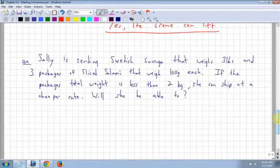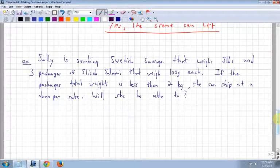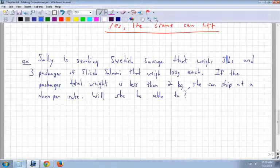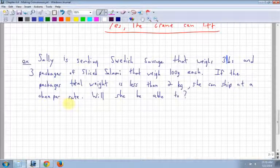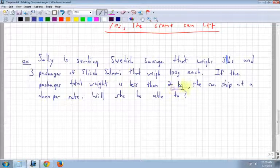Last example here. So Sally is selling Swedish sausage that weighs 3 pounds. That's confusing because it looks like a 1. 3 pounds and 3 packages of sliced salami that weigh 100 grams each. So we've got two different types of weight measurement here. Great thing about living in Canada is we use this type of thing all the time in grocery stores and in construction. We use two different types of units for measurement, which is kind of confusing. If the package's total weight is less than two kilograms, then she can ship it at the cheaper rate. So we're trying to see, can she? So we're trying to compare to kilograms. We have pounds and grams. Grams are kind of easy. Pounds, not so easy.